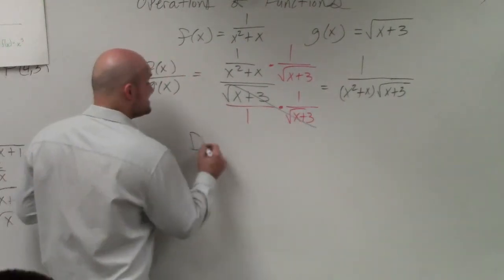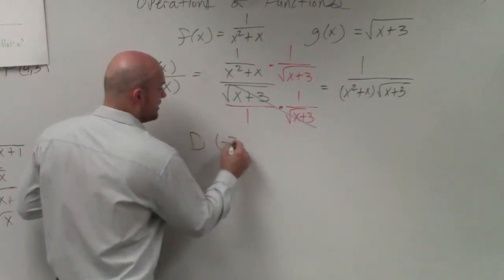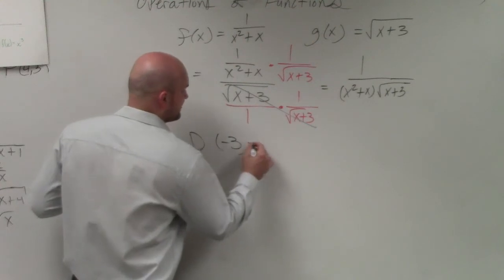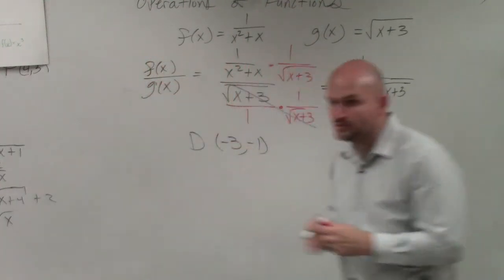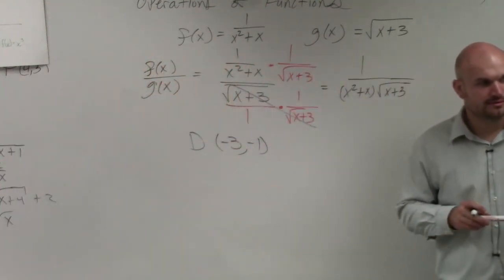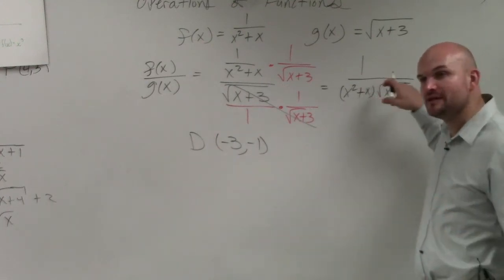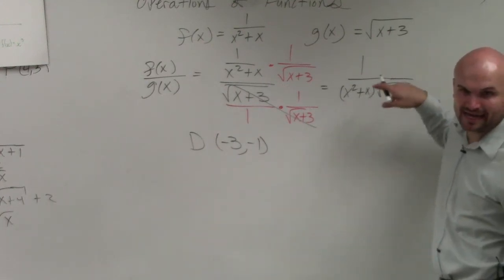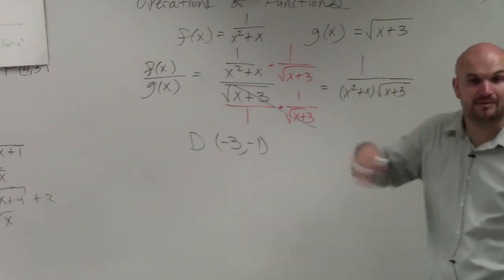So my domain is the same as before, except now negative 3 is not included, because negative 3 makes the radical 0, and 0 cannot be in the denominator.